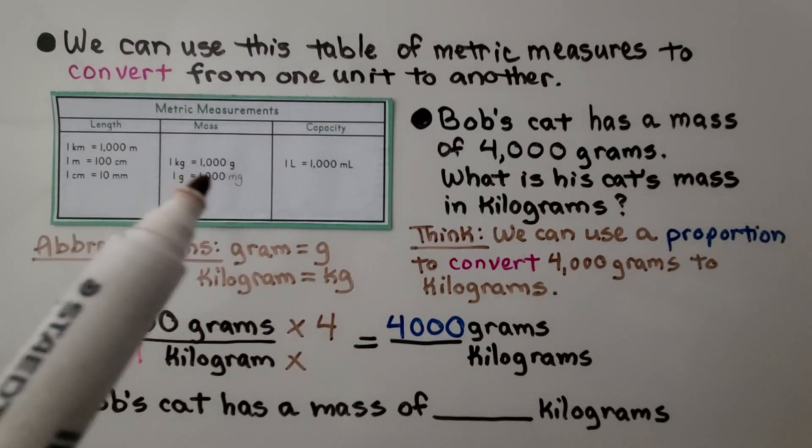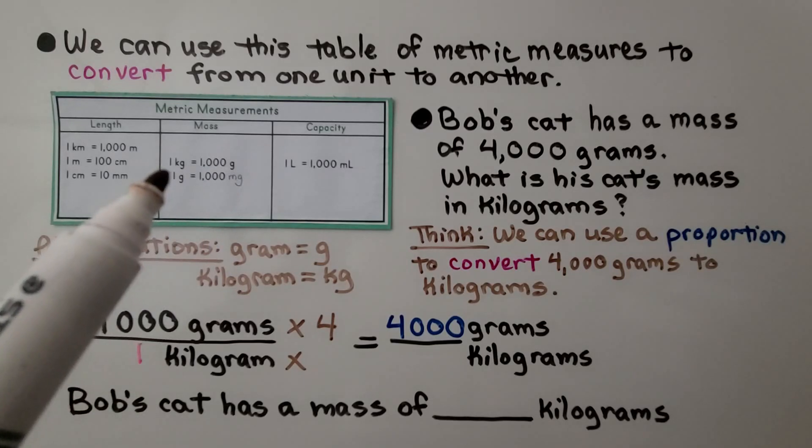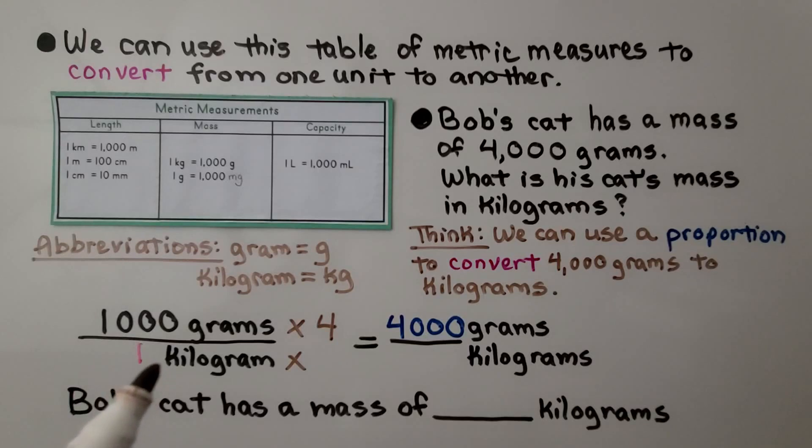It says 1,000 grams is one kilogram. We have our unit rate of 1,000 grams is one kilogram. We have 4,000 grams that we're trying to find the kilograms. For 1,000 to be 4,000, we need to multiply it by four, which means we multiply the kilograms by four. That tells us that four kilograms is 4,000 grams. So Bob's cat has a mass of four kilograms.